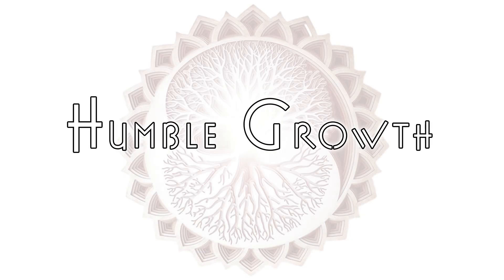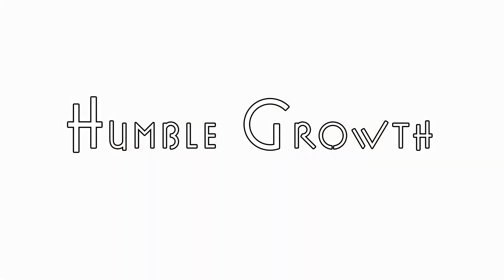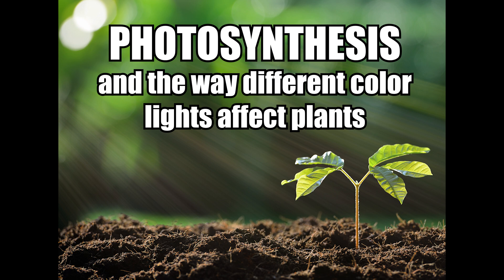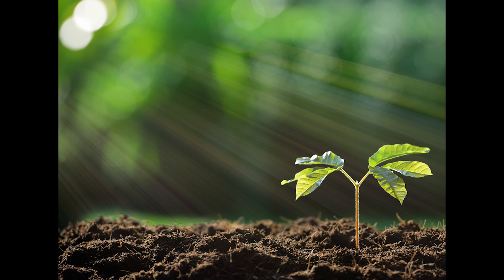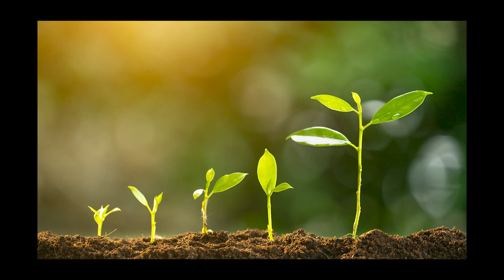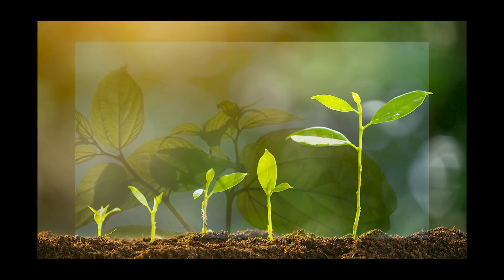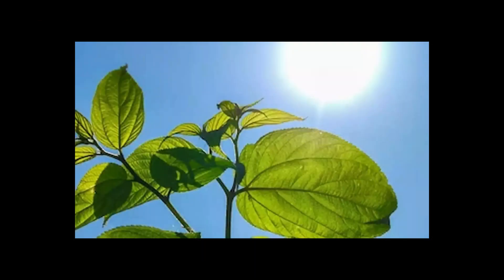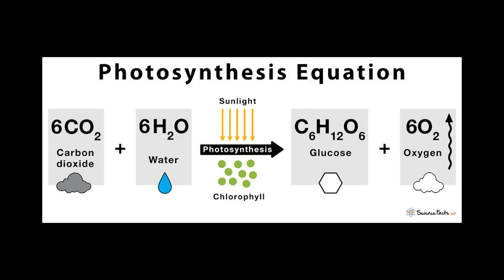Today I want to talk about lighting — more specifically, photosynthesis and the way that different light frequencies or colors affect the growth of the plant. Photosynthesis is where a plant takes energy from light and converts it into chemical energy, turning it into glucose and oxygen for itself to thrive and survive on.